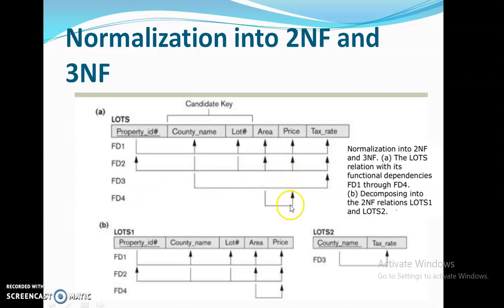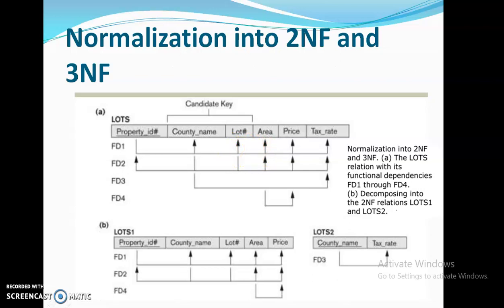FD4 says that area identifies price. Area is a non-prime attribute and price is also a non-prime attribute. When normalizing a schema, we first normalize to 1NF. All four FDs satisfy first normal form because no non-atomic values are present — no multi-valued attributes, nested relations, or composite attributes exist. So the schema satisfies first normal form.